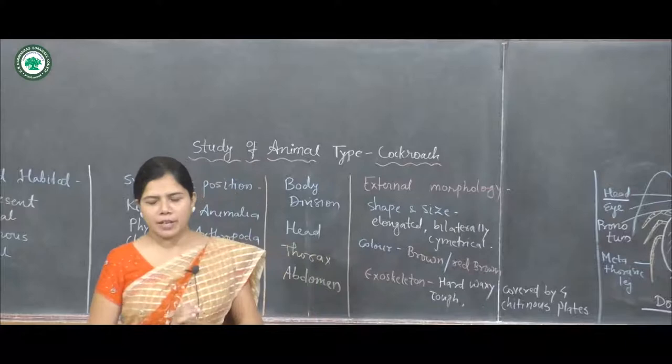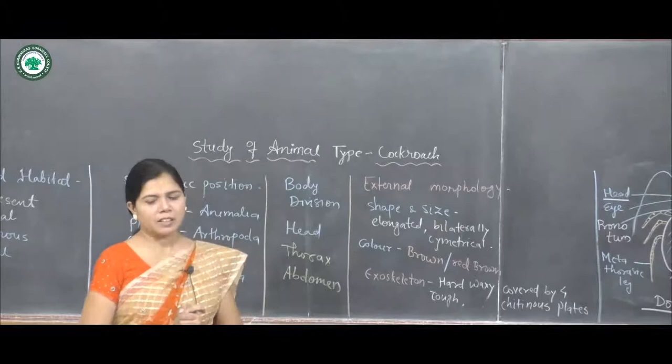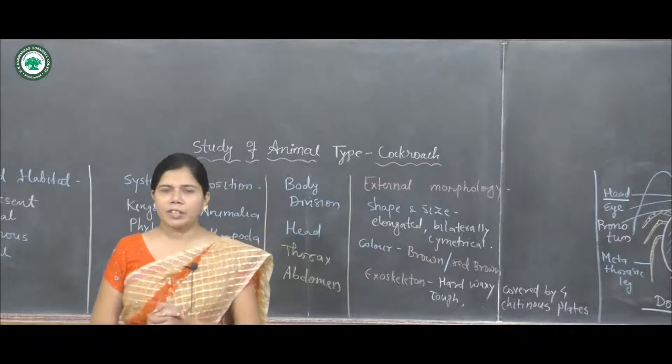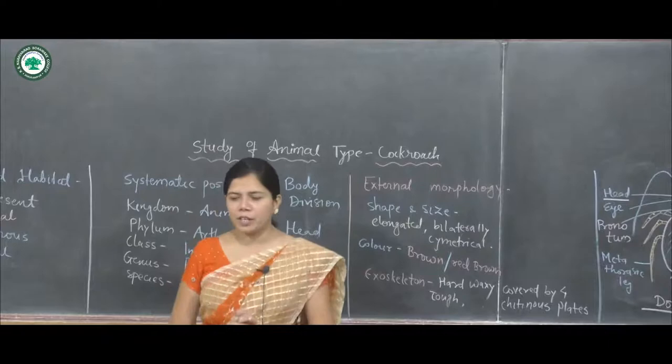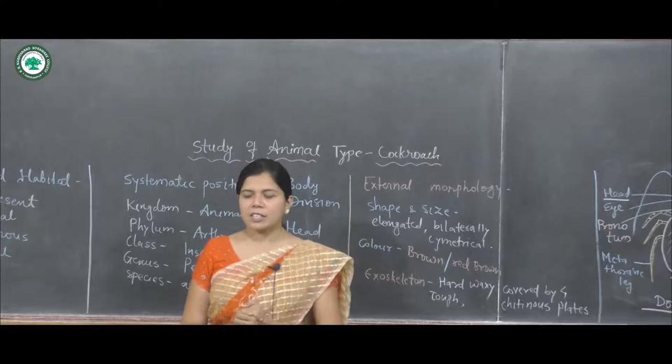Now we discuss the systematic position of the cockroach. In kingdom Animalia, it is present because the cell wall is absent and it has heterotrophic nutrition. The phylum of cockroach is Arthropoda because it has jointed appendages, a segmented body, and a chitinous exoskeleton.